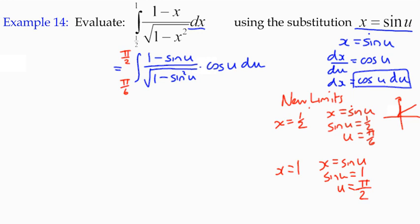We've got our new limits in terms of u. We've got this interesting expression which we haven't yet simplified. So let's do it. This denominator, 1 minus sin squared u, is the same as cos squared u. The square root of cos squared u is just cos u. So that all simplifies quite nicely.